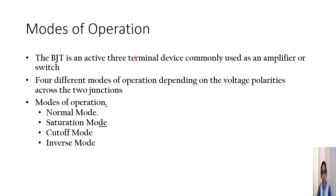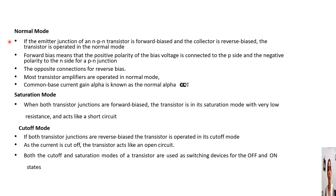The modes of operation of the microwave transistor are the same as studied previously: normal mode, saturation mode, cutoff mode, and inverse mode. In normal mode, the emitter junction is forward biased and the collector-base junction is reverse biased. Forward bias means positive polarity is connected to the P side and negative polarity to the N side of the PN junction.